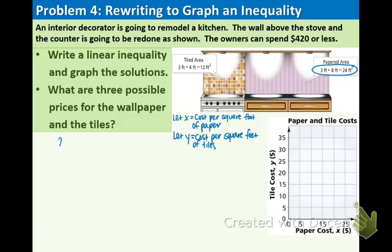So we're going to have 24x and then we're going to add the area of the tiled area multiplied by that variable. So 24x plus 12y.